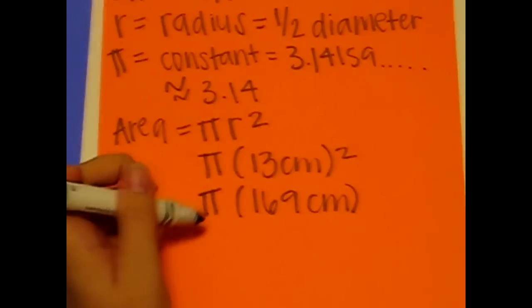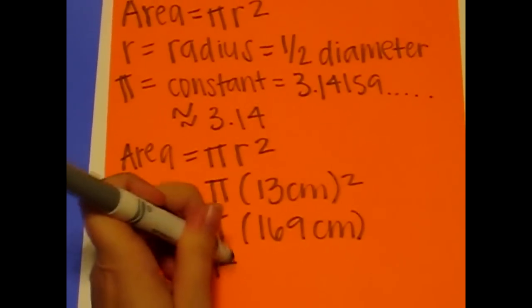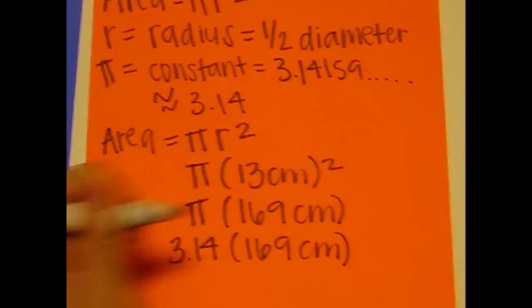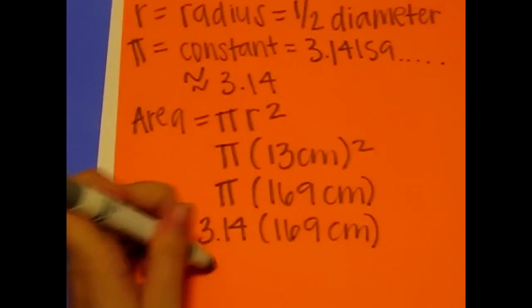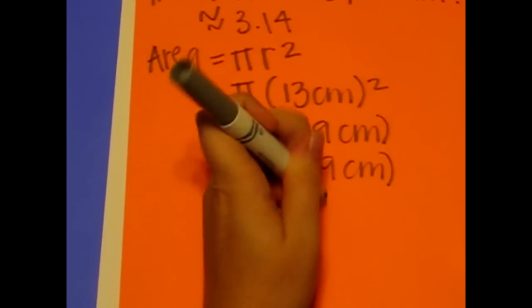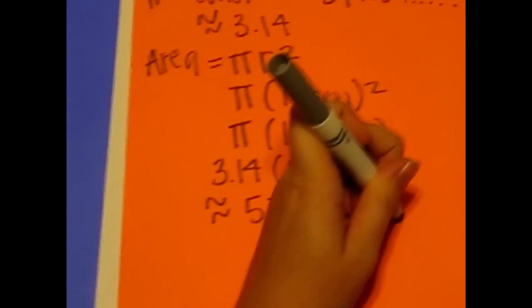Now we can round the pi to 3.14 and multiply it again by 169 centimeters, which gives us about 530 centimeters, or 530.66 centimeters squared.